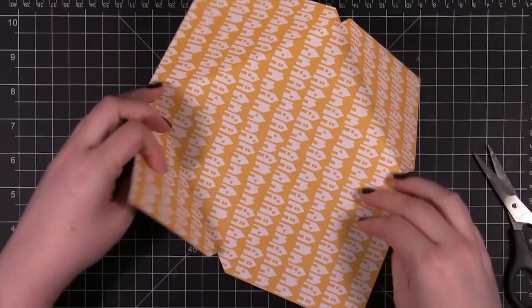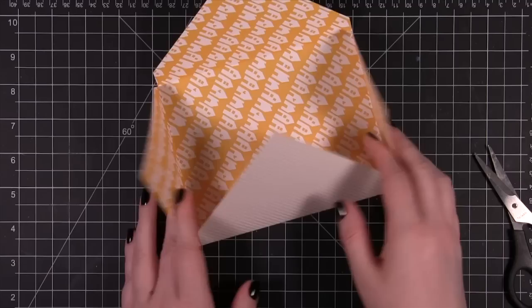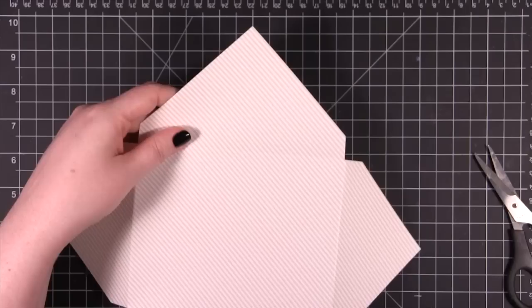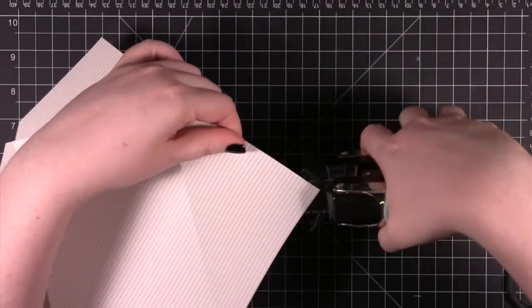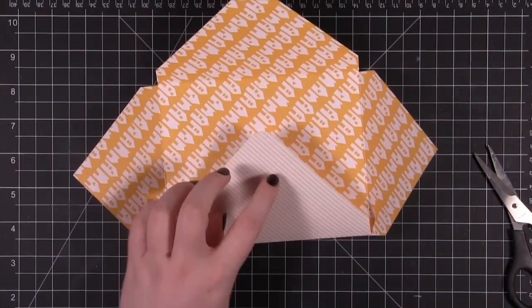You can use whatever adhesive you'd like to bring in all the corners of the envelope. One little tip I like to do is on the center fold right here, I like to bring in a corner rounder and just round the sharp corner just so it gives a little bit more of a finished look.